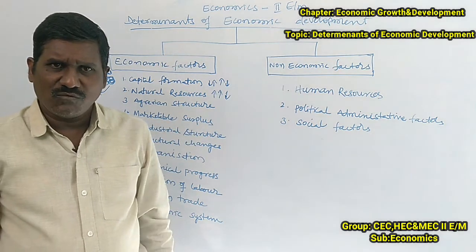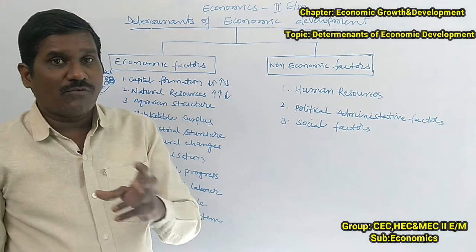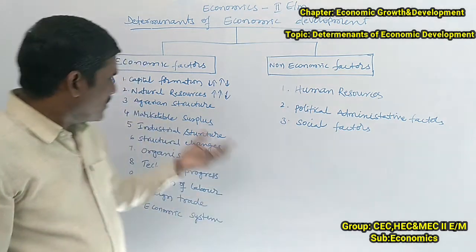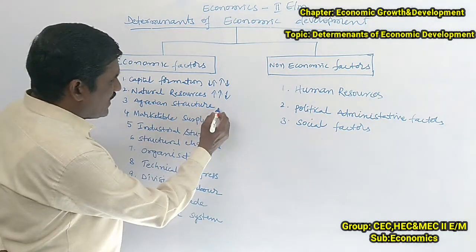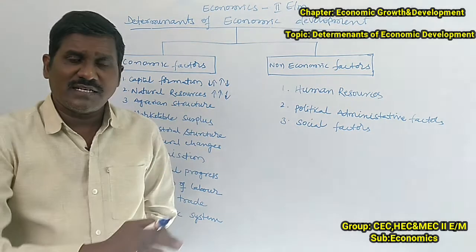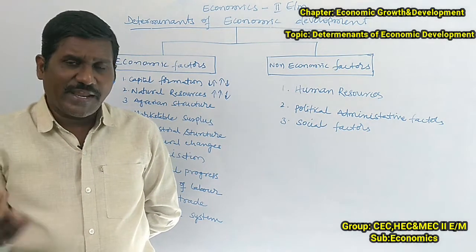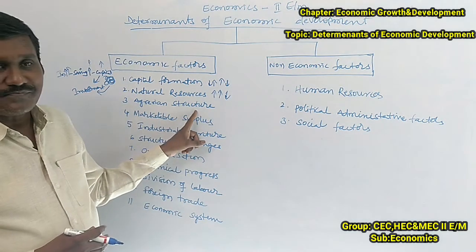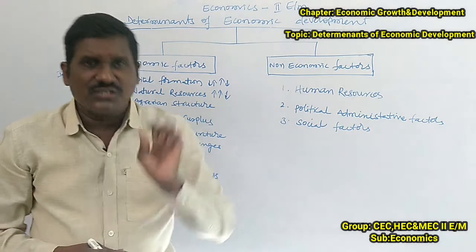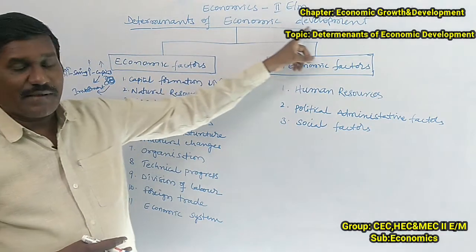The third factor is agrarian structure. Most developing countries have an agrarian structure as the backbone of their economy, including India. When the structure shifts from agriculture to the industrial and service sectors — and the importance of agriculture transitions to those sectors — per capita income, national income, and GDP will also increase. Therefore, the agrarian structure needs to change toward the industrial and service sector for economic development.